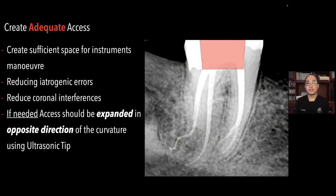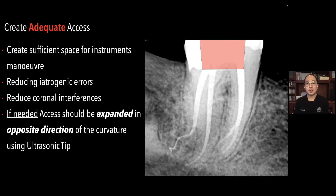How do we manage this dilacerated root canal? We need to create adequate access — meaning sufficient space for our instruments to maneuver inside the root canal. With this adequate access cavity space, it can reduce iatrogenic errors and reduce coronal interferences. Sometimes we also need to expand our access cavity in the opposite direction of the curvature using an ultrasonic tip, to have better and safer maneuverability of our instruments.